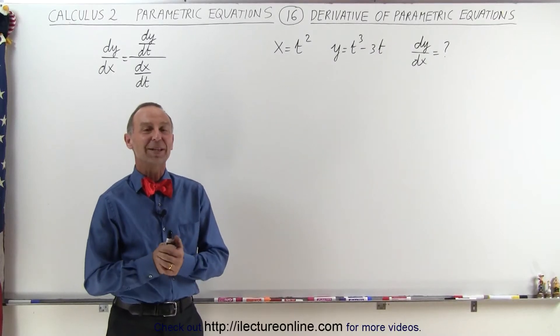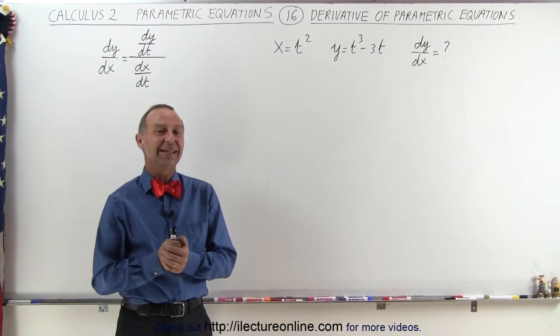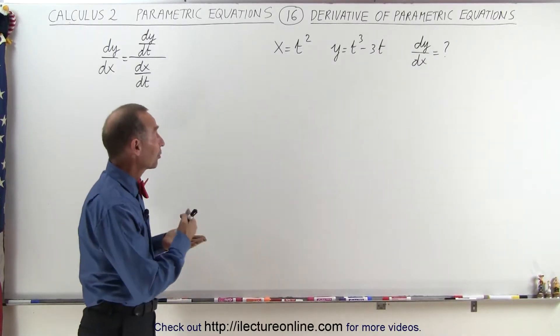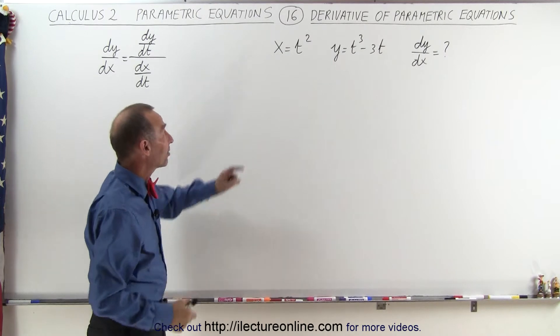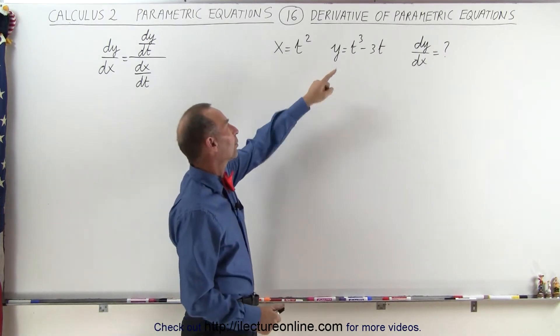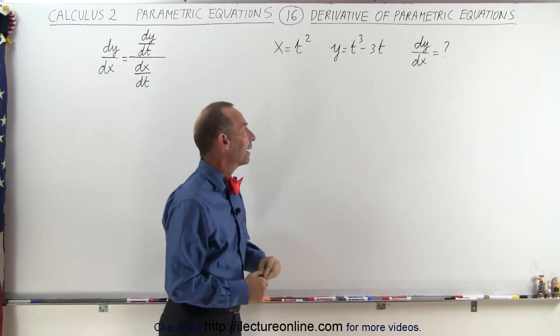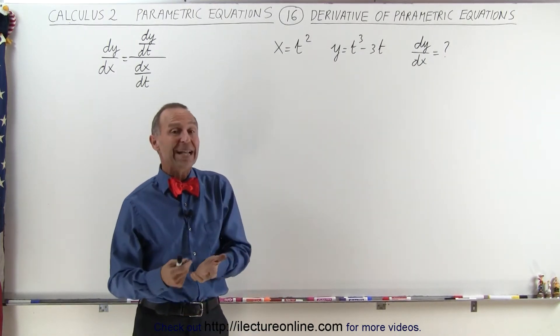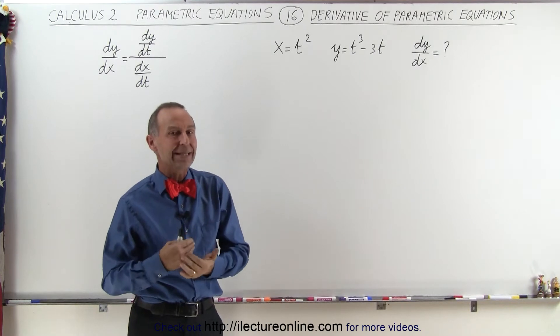Welcome to my lecture online. Here we are given two parametric equations: x equals t squared and y equals t cubed minus 3t, and we're trying to find dy/dx.